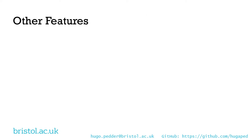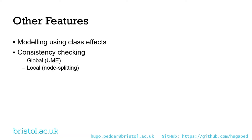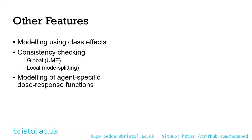Other features the package offers include modeling using class effects — you can assume that different classes of agents might have similar efficacy for some parameters. We can also do consistency checking, which is really important in network meta-analysis, either a global check or a local check. Both methods we've built in also account for the dose-response relationship, as there are extra considerations when looking at consistency in this context. We can also model agent-specific dose-response functions, so different agents in the network can have different dose-response relationships if desired.